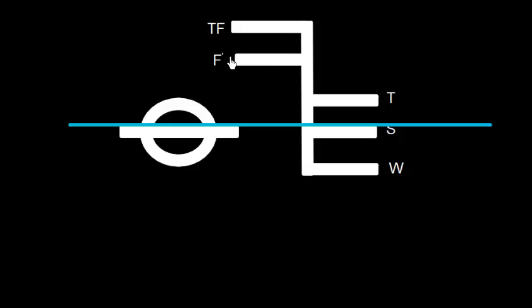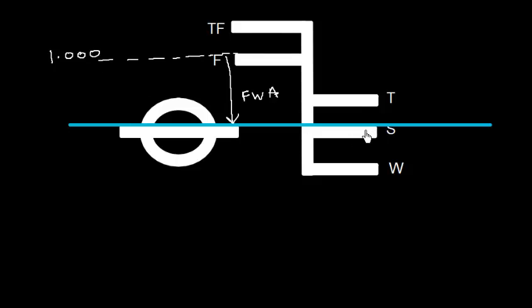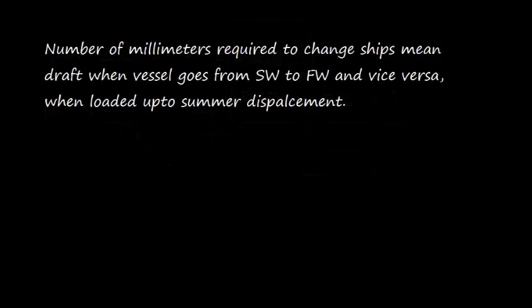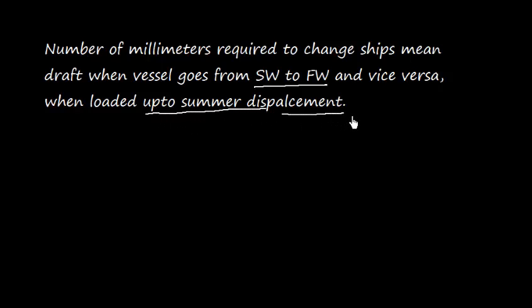The distance between the F mark and the S mark — always measured from the top edge — is nothing but the fresh water allowance. When the vessel is loaded up to the fresh water mark, the density is 1. When loaded up to the S mark, the density is 1.025. We can say the vessel behaves like a hydrometer — it can indicate the density of the water. Fresh water allowance is defined as the number of millimeters required to change a ship's mean draft when a vessel goes from salt water to fresh water, and vice versa, when loaded up to the summer displacement.